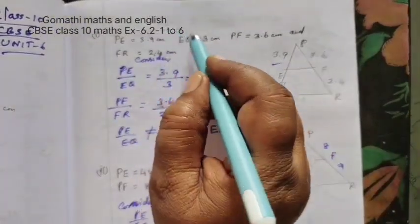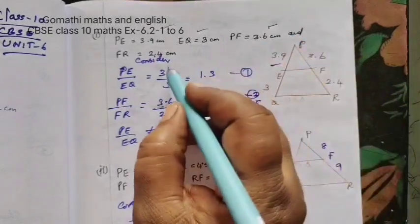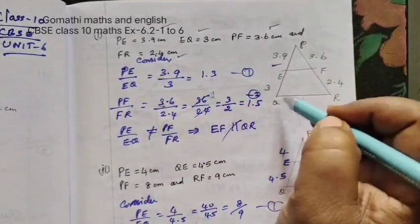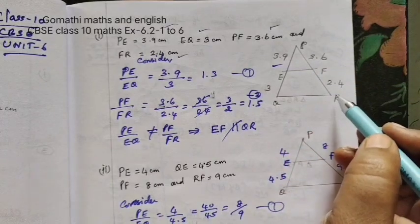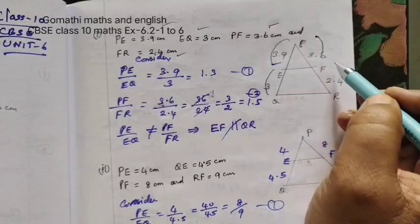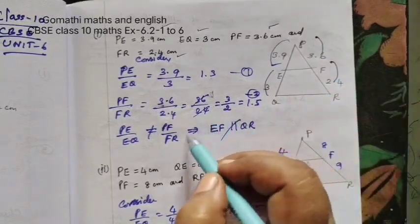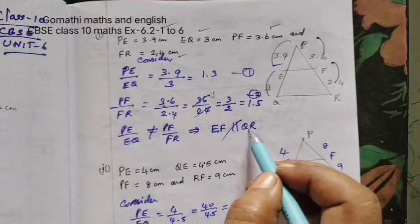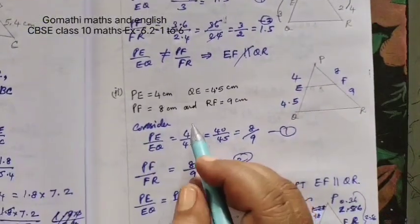Given 4 values here, you are using PE by EQ equal to PF by FR. This by this equal to this by this. Here it is not equal, which means EF not parallel to QR.